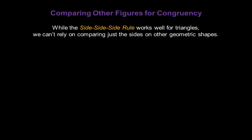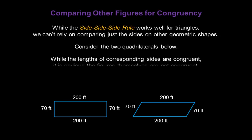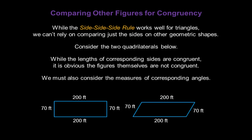Now, while the side-side-side rule works well for triangles, we can't rely on comparing just the sides on other geometric shapes. Consider the two quadrilaterals below. While the lengths of corresponding sides are congruent—the tops and bottoms are both the same, and the sides are both the same—it's obvious, just by looking at the figures themselves, that they're not congruent. We must also consider the measures of corresponding angles.